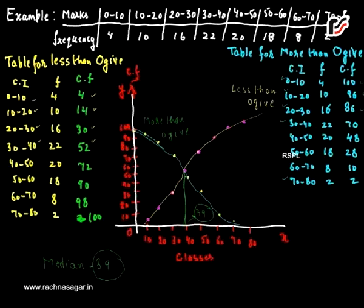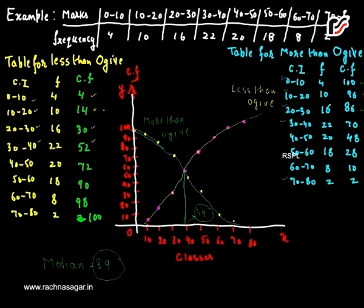The two curves are intersecting at a point. From this intersection point, we draw a perpendicular to the x-axis. The perpendicular intersects the x-axis at 39. Therefore, the median for this data is 39.